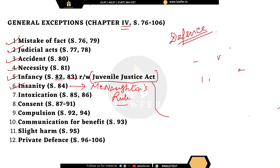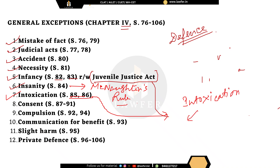Next is intoxication: if a person is under the influence of alcohol or an intoxicated substance, their acts will generally be considered not guilty. However, we must check whether the intoxication was voluntary or involuntary. If the person consumed alcohol voluntarily without any force or influence from others, they cannot take this defence and will be held guilty. But if the intoxication was involuntary — someone was forcefully intoxicated or intoxicated through fraud or deceit — then the person can take up the defence of intoxication.